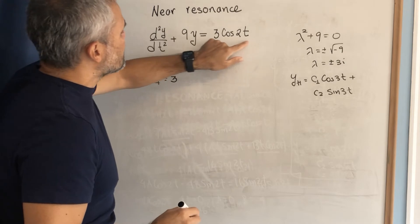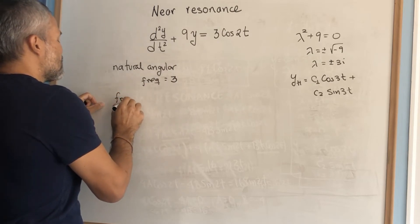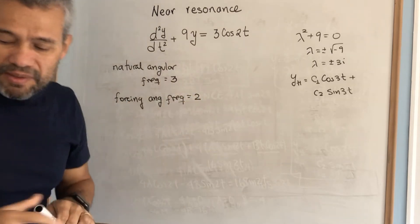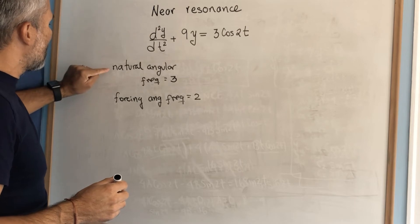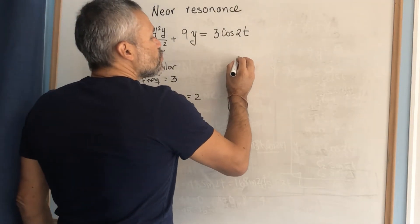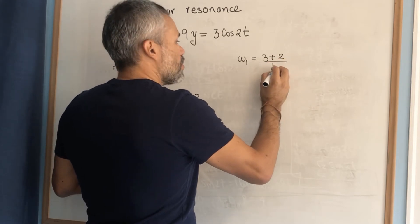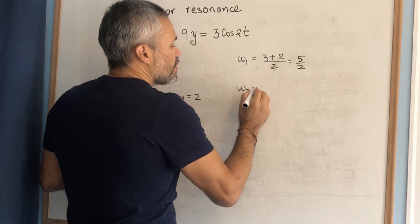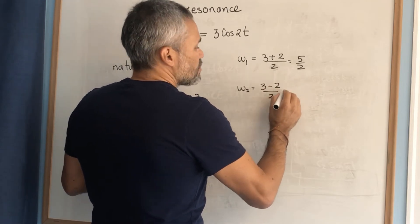The non-homogeneous part represents the external force, and it comes with a forcing angular frequency. Given this differential equation, we can right away identify the natural angular frequency and the forcing frequency. With these two frequencies, we compute two others: ω₁, the average of the two — (3 + 2)/2 = 5/2 — and ω₂, the difference of the largest minus the smallest divided by 2 — (3 − 2)/2 = 1/2.